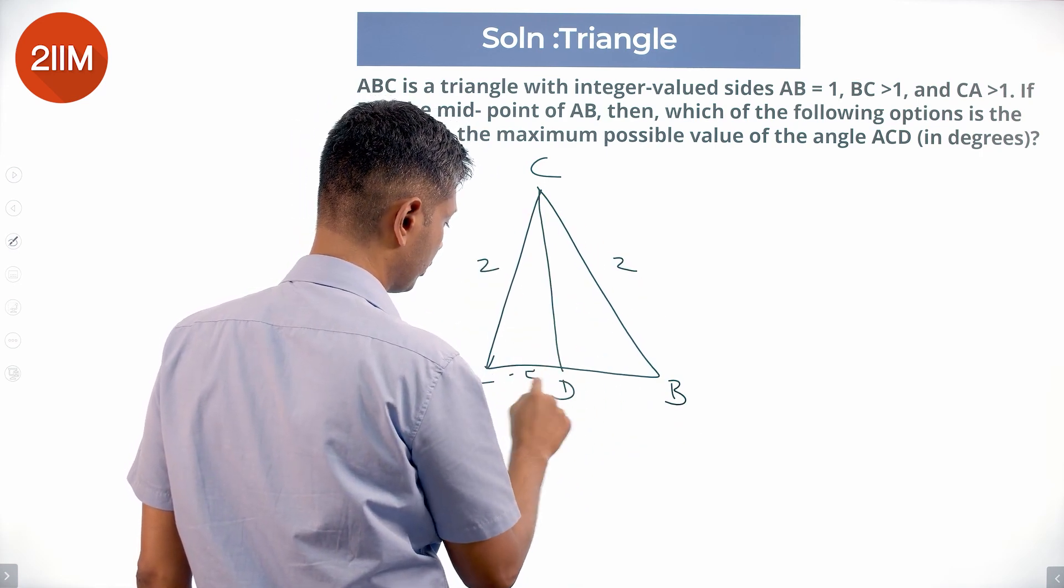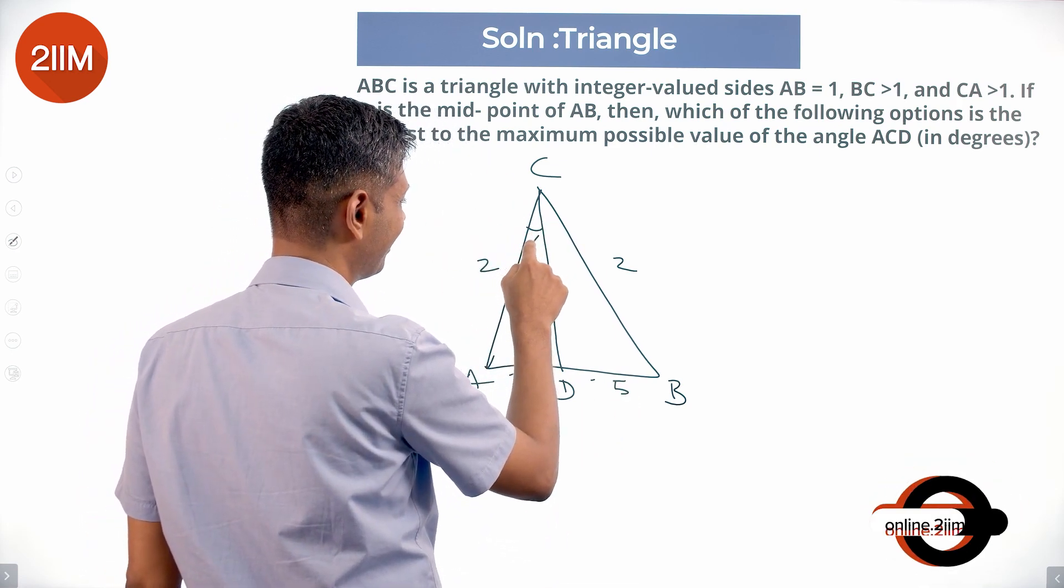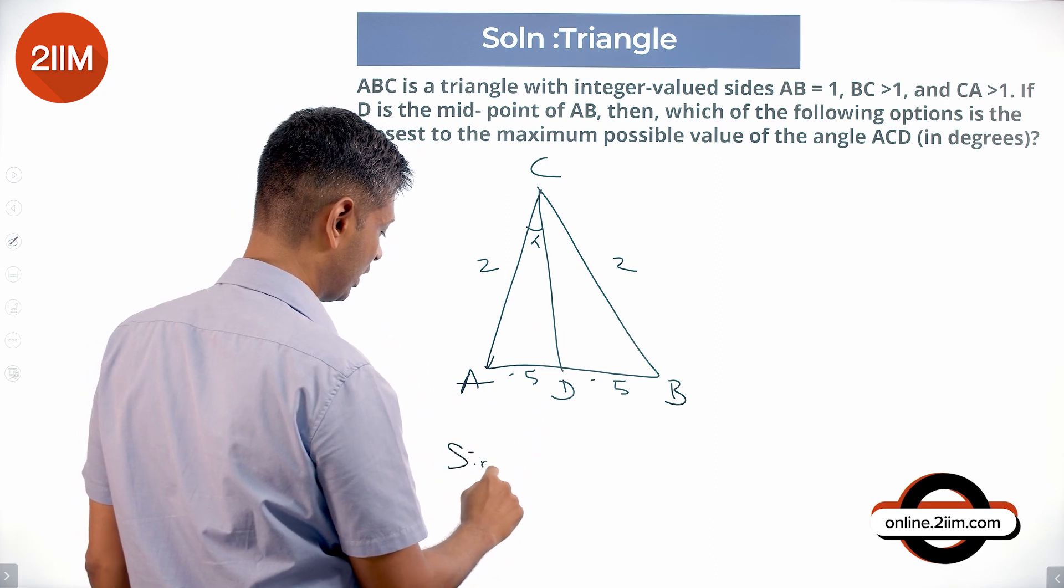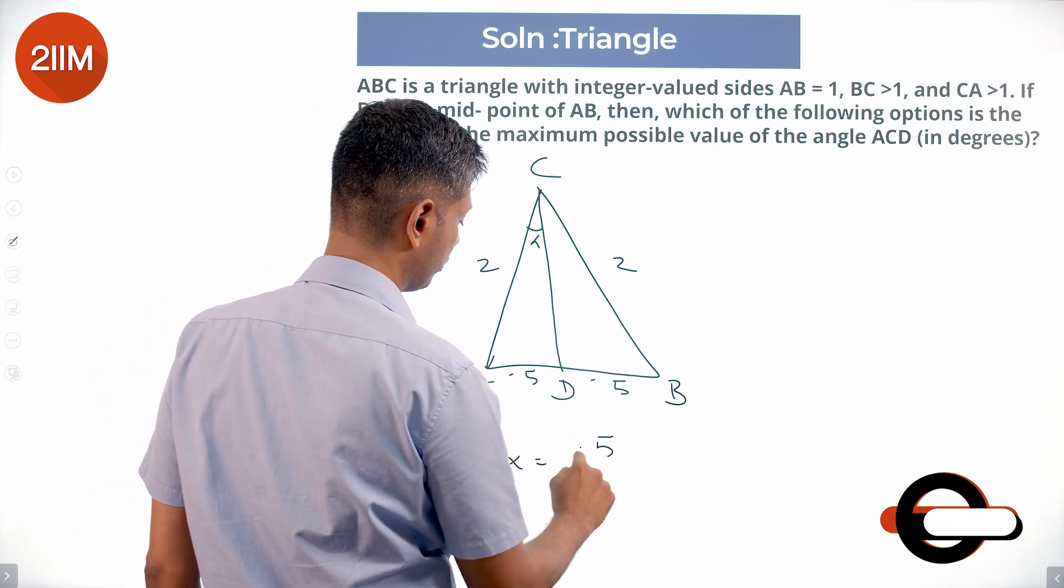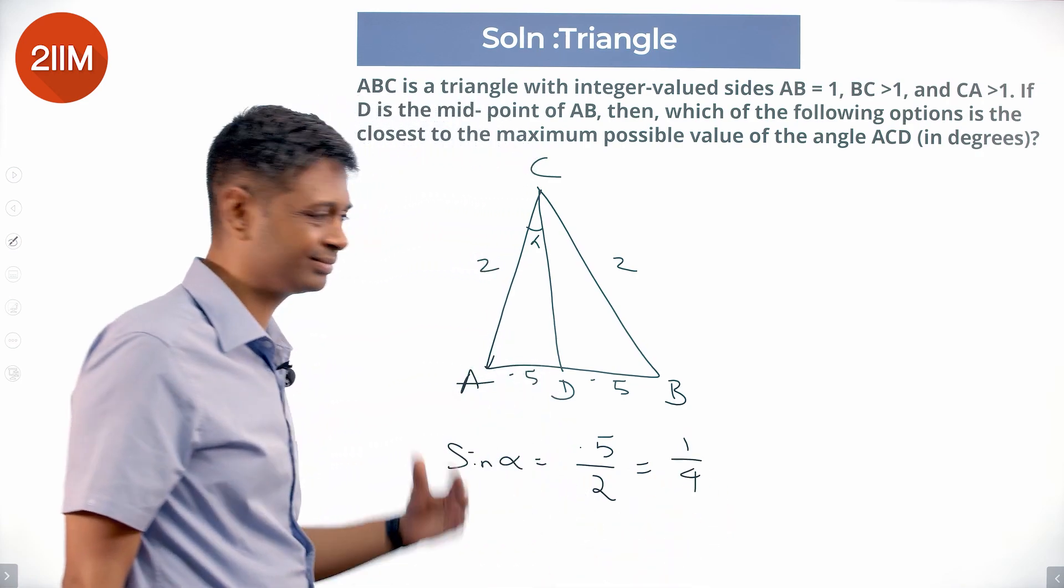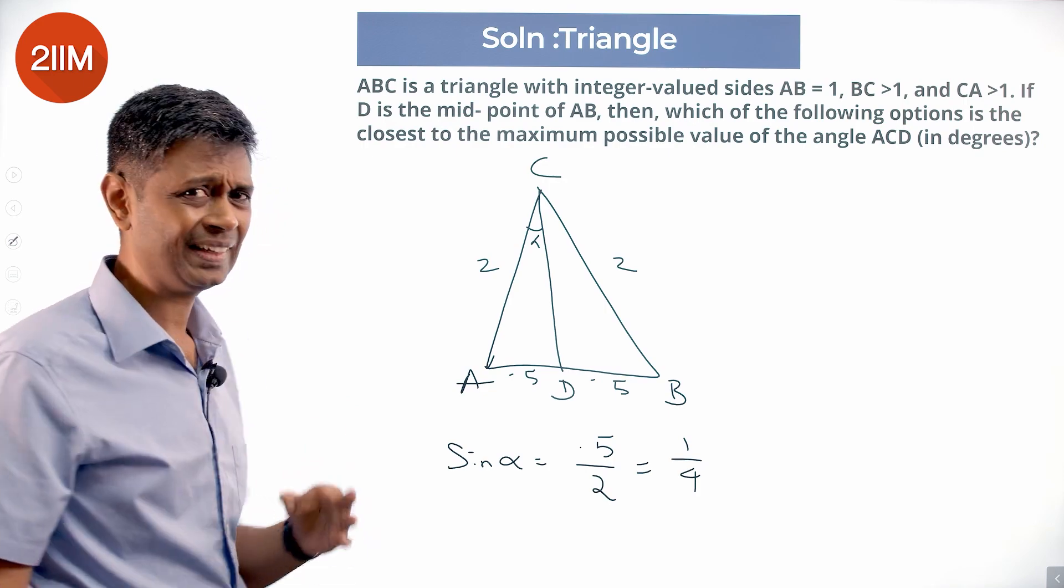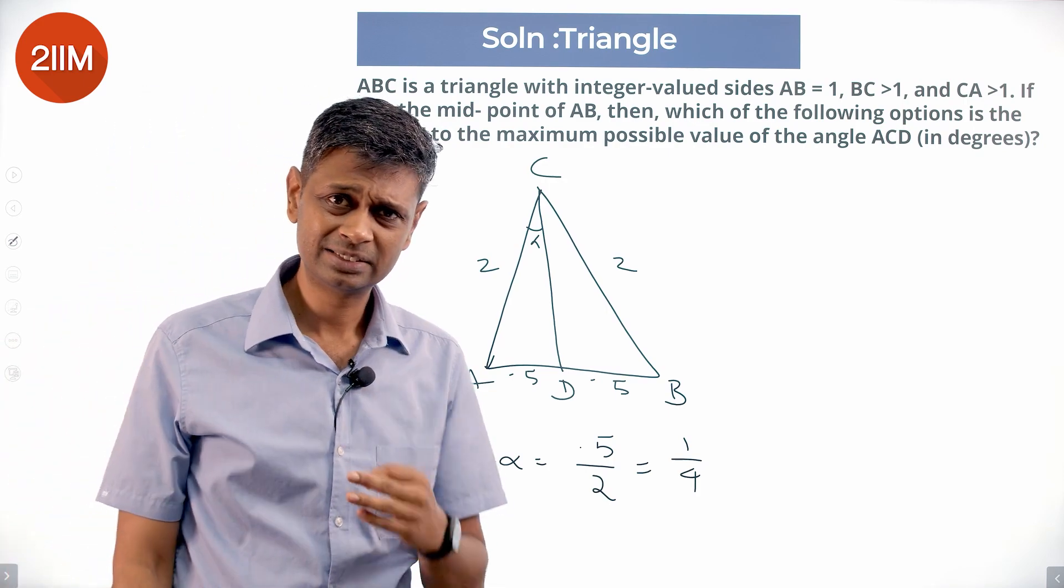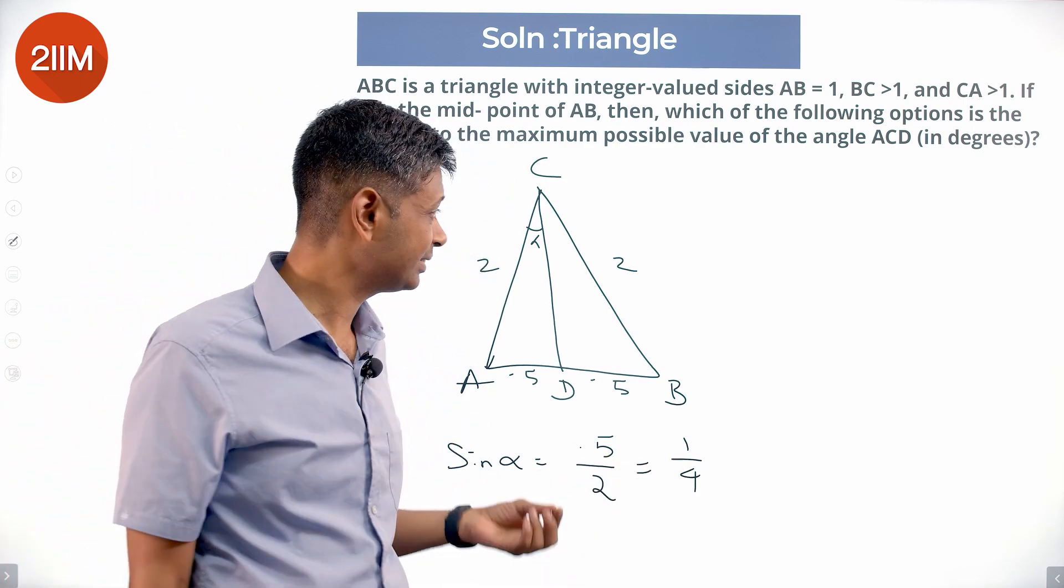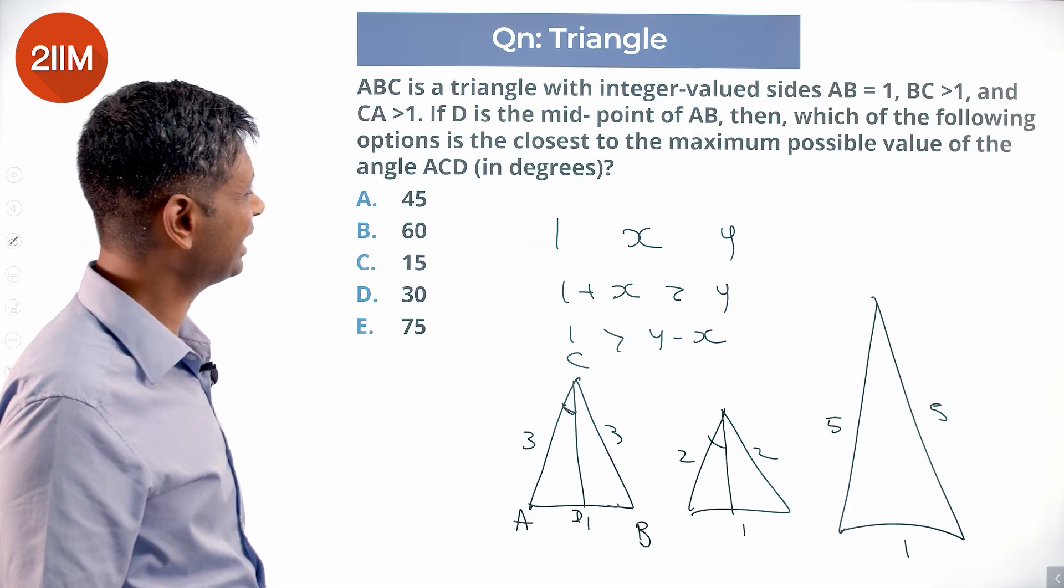We want to find the maximum value of this angle. We call this angle as alpha. And sine of alpha is 0.5 by 2, which is 1 by 4. Sine of alpha is 1 by 4. And so sine 30 is half - this is half of that.